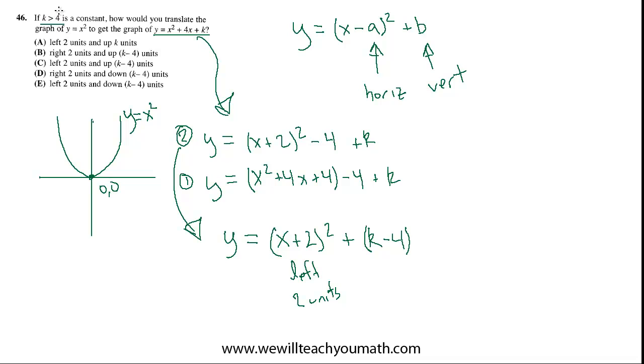And then here, assuming k is greater than 4, the quantity k minus 4 is going to be positive. So, this moves us k minus 4 units up. Vertical shift up k minus 4 units.